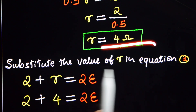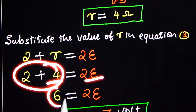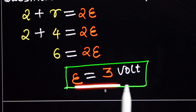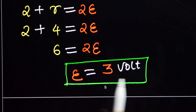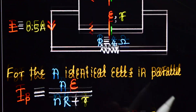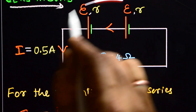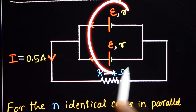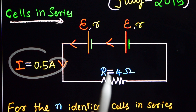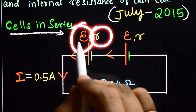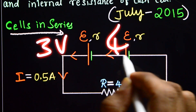Now substitute the value of small r into equation 1. Equation 1 says 2 plus small r equals 2E. Small r is 4, so 2 plus 4 is 6, giving 6 equals 2E, or EMF E equals 3 volt. So the internal resistance is 4 ohm and the EMF of each cell is 3 volt. When two identical cells are connected in series or in parallel giving the same current of 0.5 Ampere, the EMF of each cell is 3 volt and internal resistance is 4 ohm.